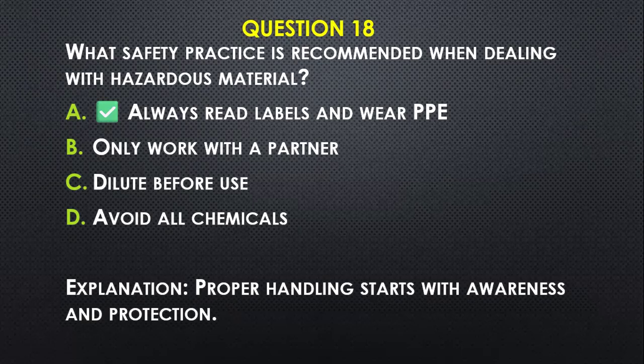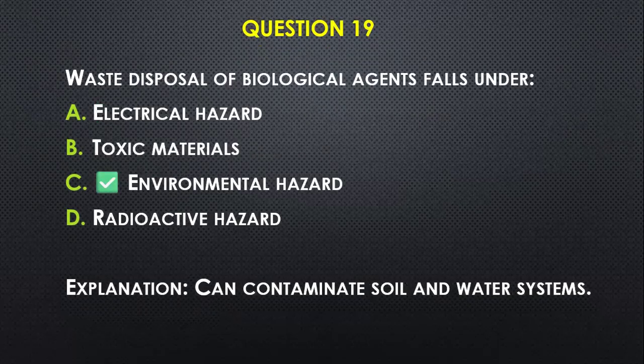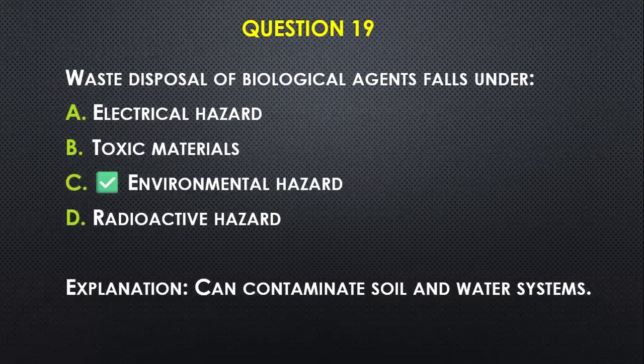Question number nineteen: Waste disposal of biological agents falls under — A) electrical hazard, B) toxic material, C) environmental hazard, D) radioactive hazard. C — environmental hazard — because those things you are disposing of carelessly can contaminate the soil as well as the water system.